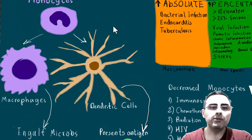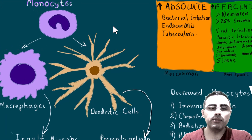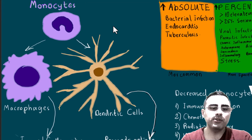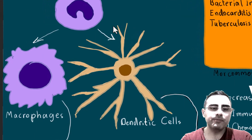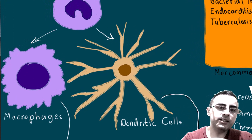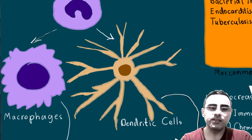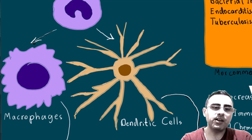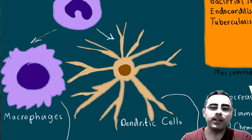Let's discuss what monocytes do. Monocytes circulate in the blood, and when pathogens — bacteria or viruses — enter the body, they react, they migrate, and they differentiate into two types of cells. The first type is macrophages and the second type is dendritic cells.